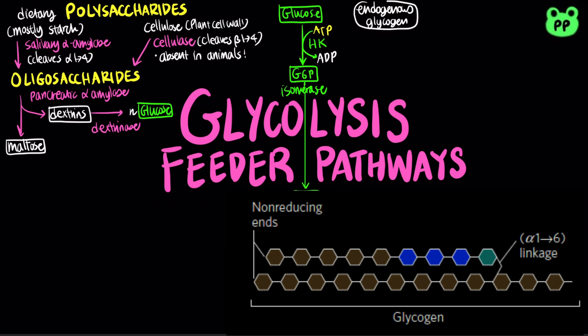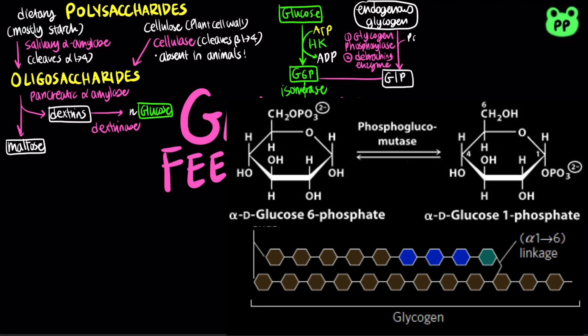Glycogen stored in animal tissues can be degraded into glucose-1-phosphate by the enzymes glycogen phosphorylase and debranching enzyme. Phosphoglucomutase converts glucose-1-phosphate to glucose-6-phosphate, which is an intermediate of glycolysis. More details about glycogen metabolism will be discussed in the next video.